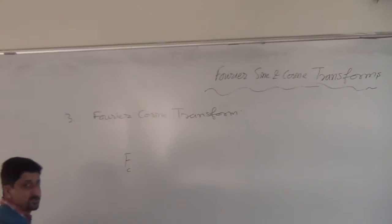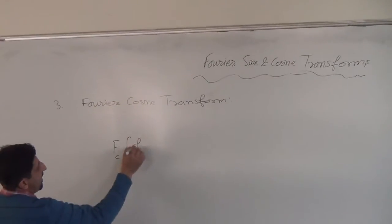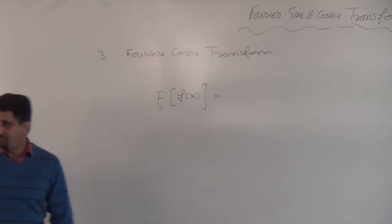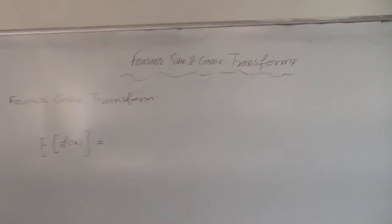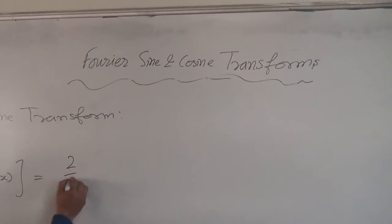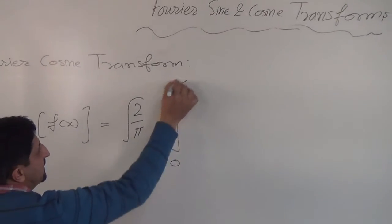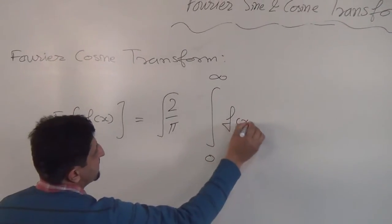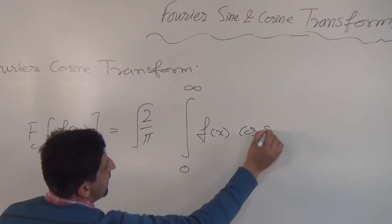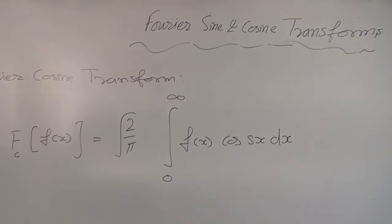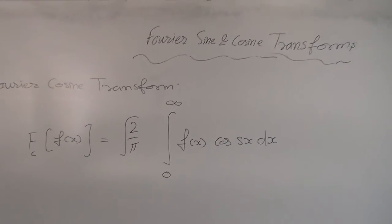This is denoted by a subscript, seen and denoted by this. Of any concept f(x), the Fourier cosine transform is denoted like this: F_c(s) equals 2 upon pi under integral 0 to infinity f(x) cos(sx) dx. This is Fourier Cosine Transform.